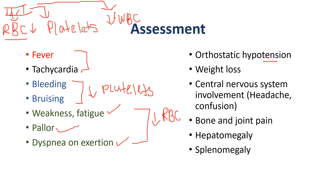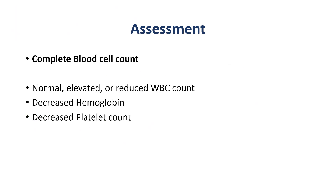Additional assessments include orthostatic hypotension, weight loss, and central nervous system involvement such as headache and confusion. You'll also see bone and joint pain because crowding of white blood cells causes pain in the bones and joints. Hepatomegaly and splenomegaly are also observed.